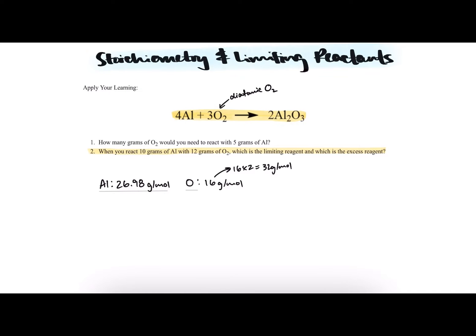When asked for a limiting reagent, start with the respective starting amounts of each reagent—10 grams of aluminum versus 12 grams of O₂—and use stoichiometry to see how much product each reactant could make if the other was not a factor at all.